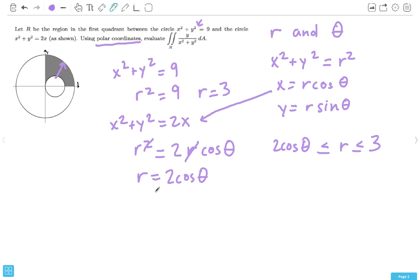Now, we want to find the theta bounds. It's pretty simple from this picture because you can see that theta starts at 0. It travels a quarter of a circle and ends up at pi over 2. So, this is in between 0 and pi over 2.